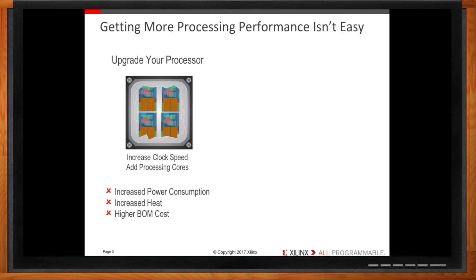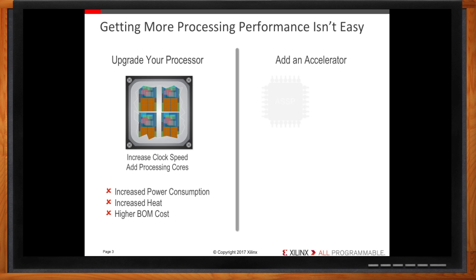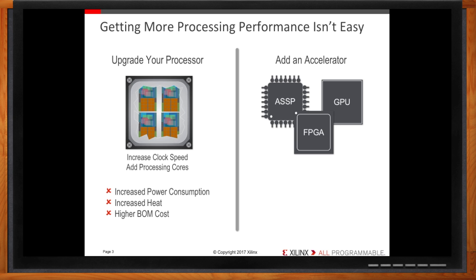High-end processors can be too expensive for consumer applications, and for performance-hungry tasks like real-time stereo vision, they're not sufficient. So upgrading your microprocessor won't get the job done. Let's take another angle — let's try adding an accelerator. We can offload the compute-intensive routines to hardware, freeing your microprocessor for other tasks. In some cases, the addition of the accelerator means you can use a less expensive, lower-power microprocessor to make your design more efficient.